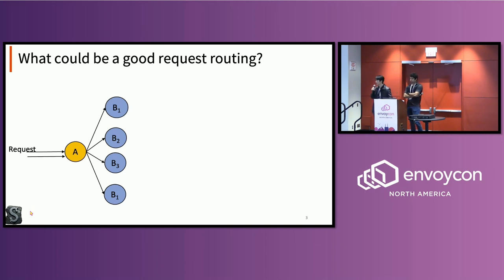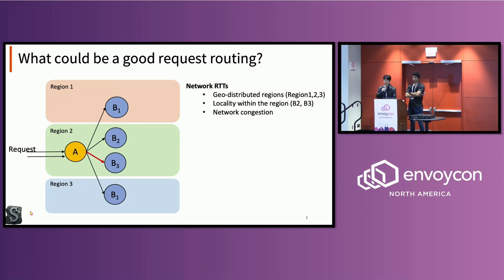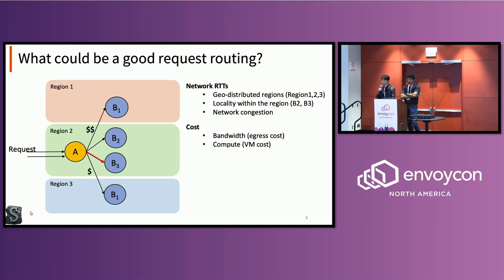There's service A and B, and we have four different replicas for B. The first thing we need to consider is network RTT — different geographic regions can incur different network RTTs. Even within the same region, locality matters, and there could be network congestion. We also need to consider cost, for example bandwidth costs — you pay egress costs when transferring data from your local region to a remote region.